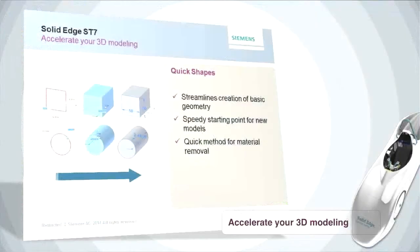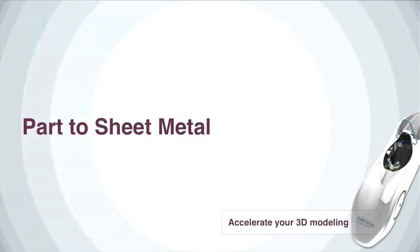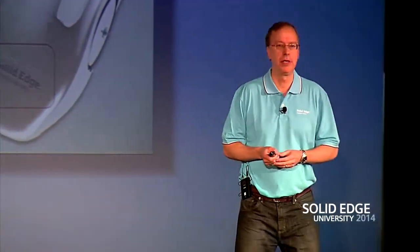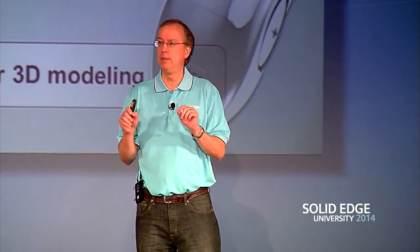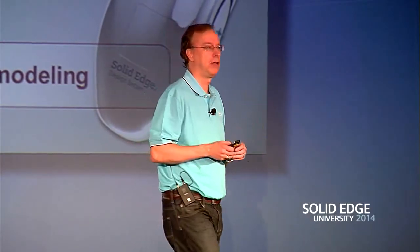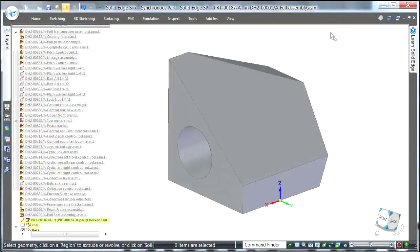Next up is Part to Sheet Metal. You may be wondering why we created a solid block — but we're headed for a sheet metal part. You may be familiar with the convert to sheet metal command, designed to take a part that's already thin and sheet-metal-like. But here we're talking about being able to bend up a part around a solid model — a very fast method of creating sheet metal parts.